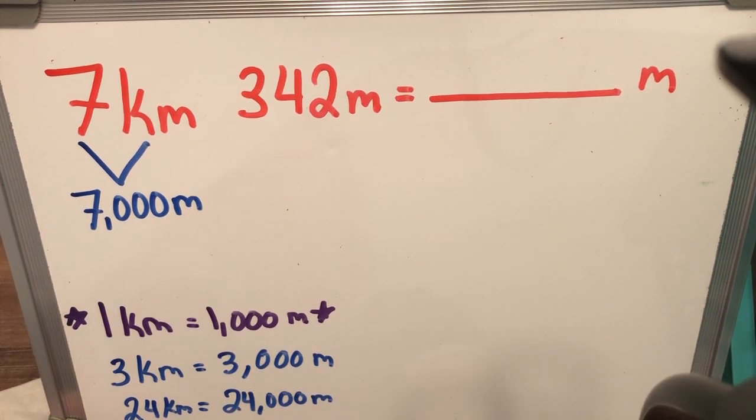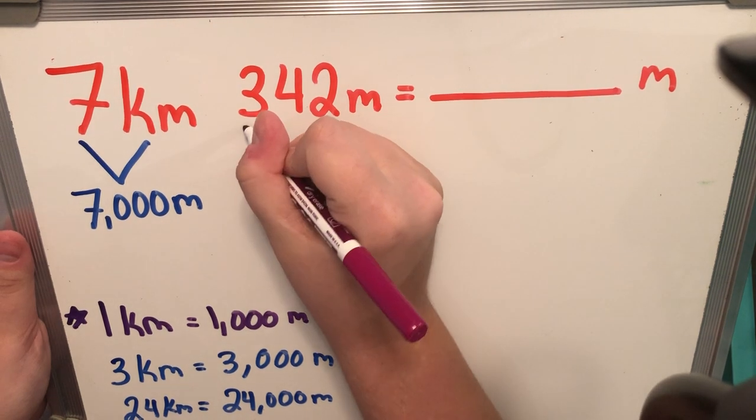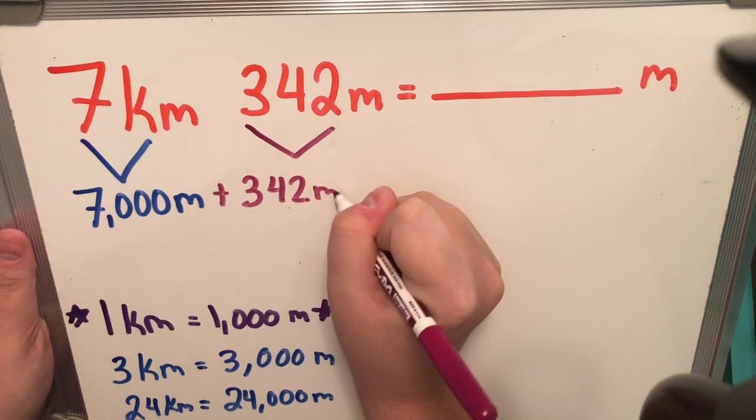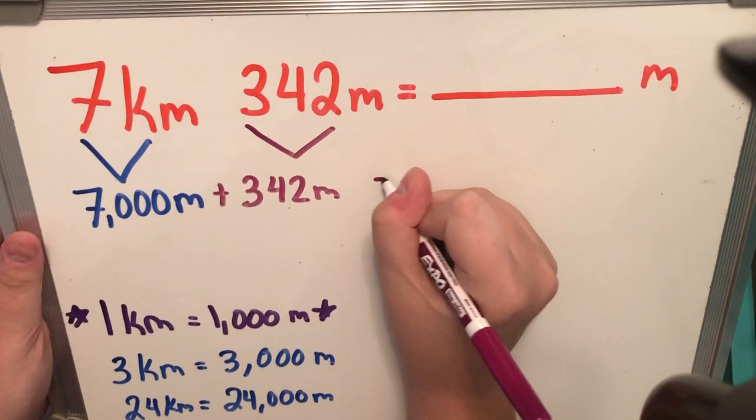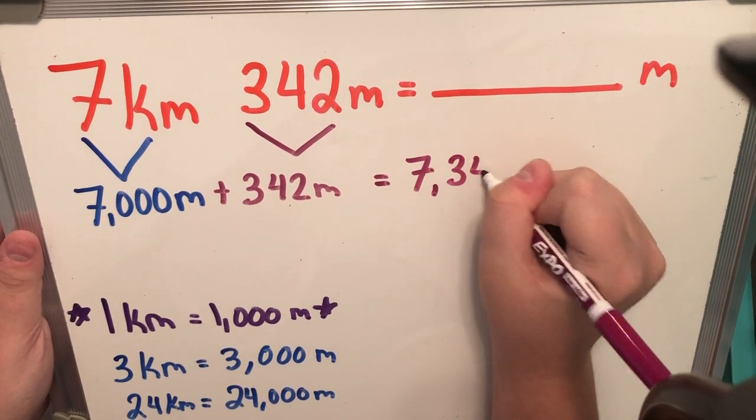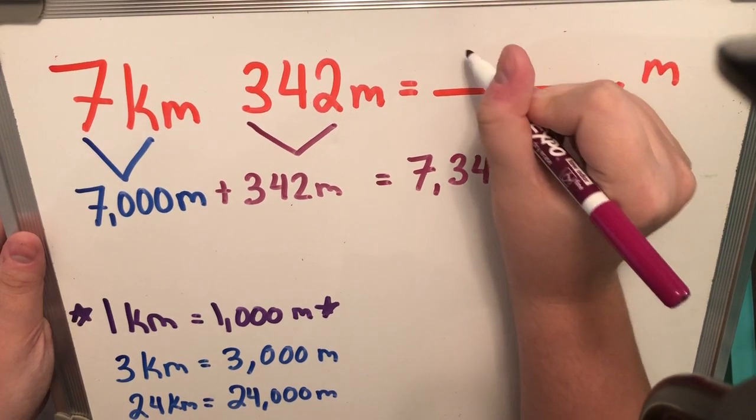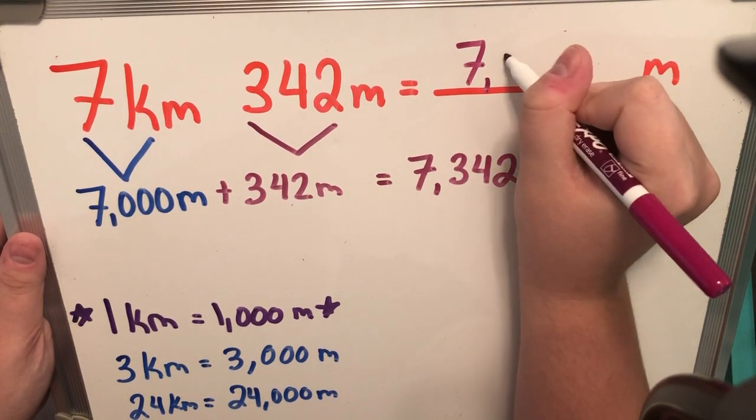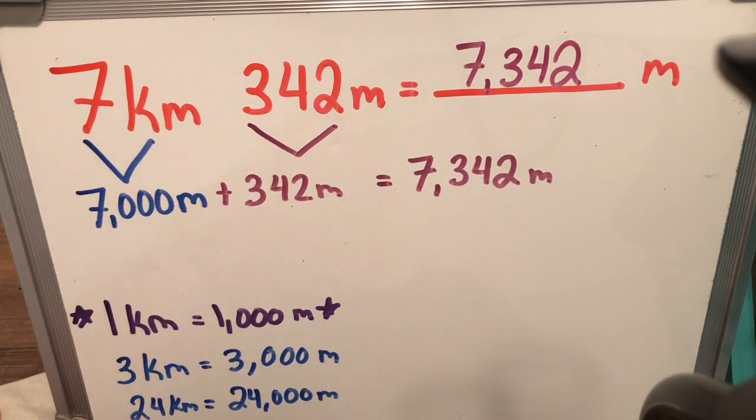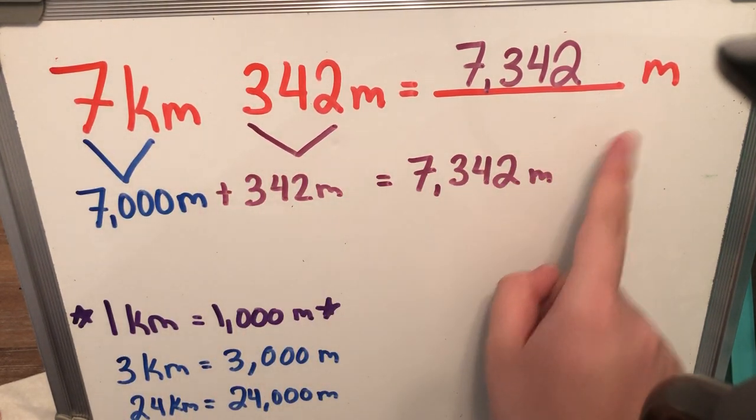Now, I'm not done because I still have this part of the problem, 342 m. And what I'm going to do is I'm going to add this 342 m to the 7,000 m we have, which is going to give me a total of 7,342 m, which is exactly what our problem is asking us to find. It gave us 2 unlike metric units that we had to convert to equal the meters.